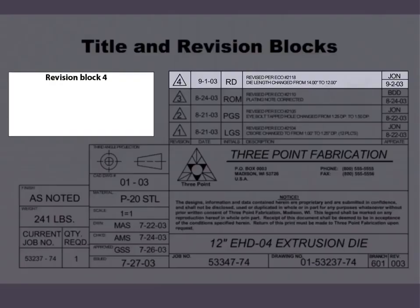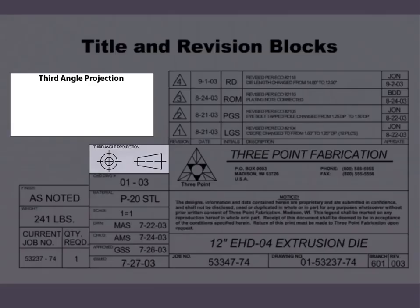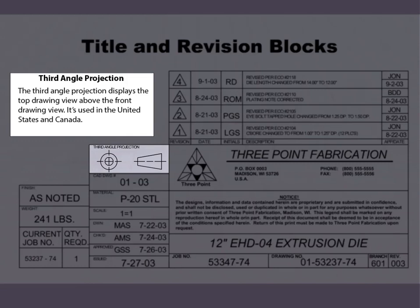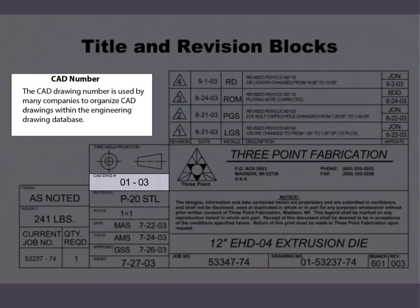Revision Block 4. Third angle projection displays the top drawing view above the front drawing view. It is used in the United States and Canada. The CAD drawing number is used by many companies to organize CAD drawings within the engineering drawing database.